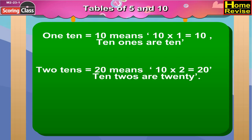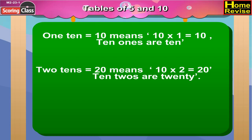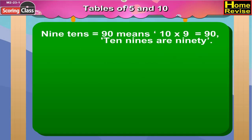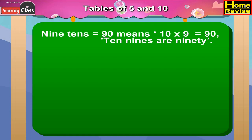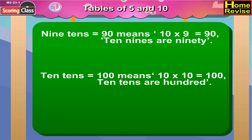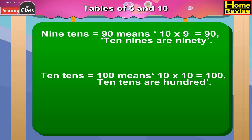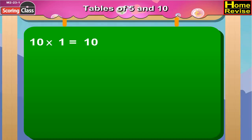Two tens is equal to twenty, means ten multiply by two is equal to twenty. Ten twos are twenty. If we go on like this, we get nine tens is equal to ninety, means ten multiply by nine is equal to ninety. Ten nines are ninety. And at last, ten tens are one hundred.